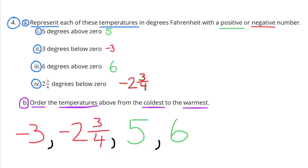Number 3: 6 degrees above 0 — that would be positive 6, or 6. Number 4: 2 and 3 fourths degrees below 0 — that would be negative 2 and 3 fourths.